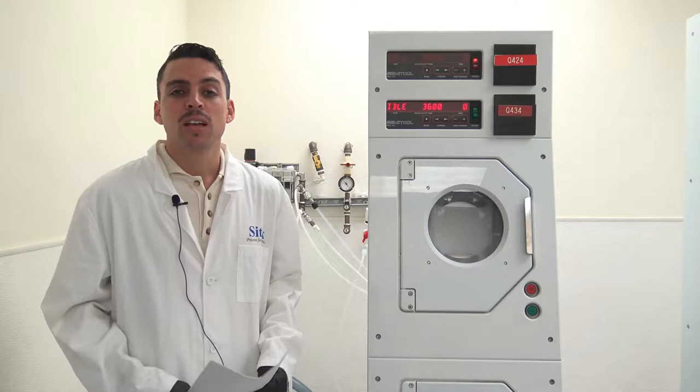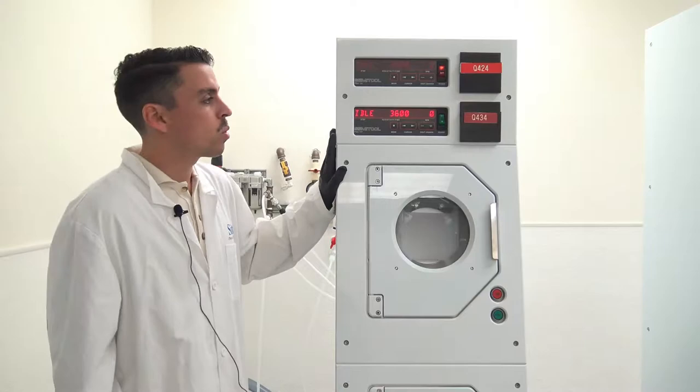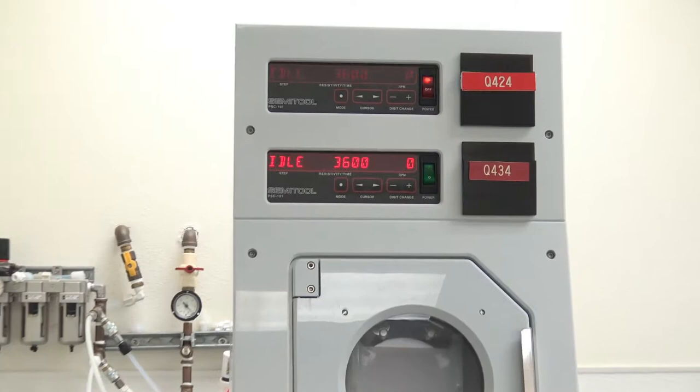Today, we'll be viewing a fully refurbished 870S Semi-Tool Spin Rinser Dryer. This customer sent their Rinser Dryer in for a full refurbishment, which is why you will see their own identification tags still on the front of the tool.